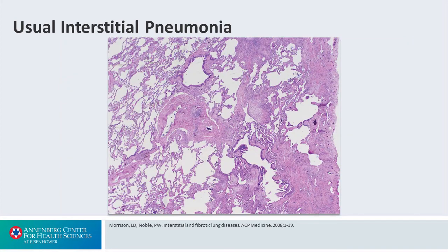Now that term is important. All it means is the usual or most common type of scar. When you look at this slide, it really says everything you need to see. What you notice first is a juxtaposition of normal lung on the left side of the slide versus abnormal fibrotic tissue on the right.